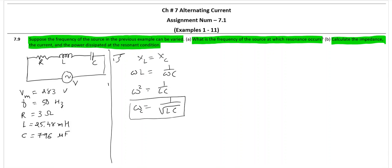For resonance frequency, you can take omega to be 2 pi f, and then f is 1 by 2 pi, 1 by root LC. So this is the resonance frequency which we are asked to find out.